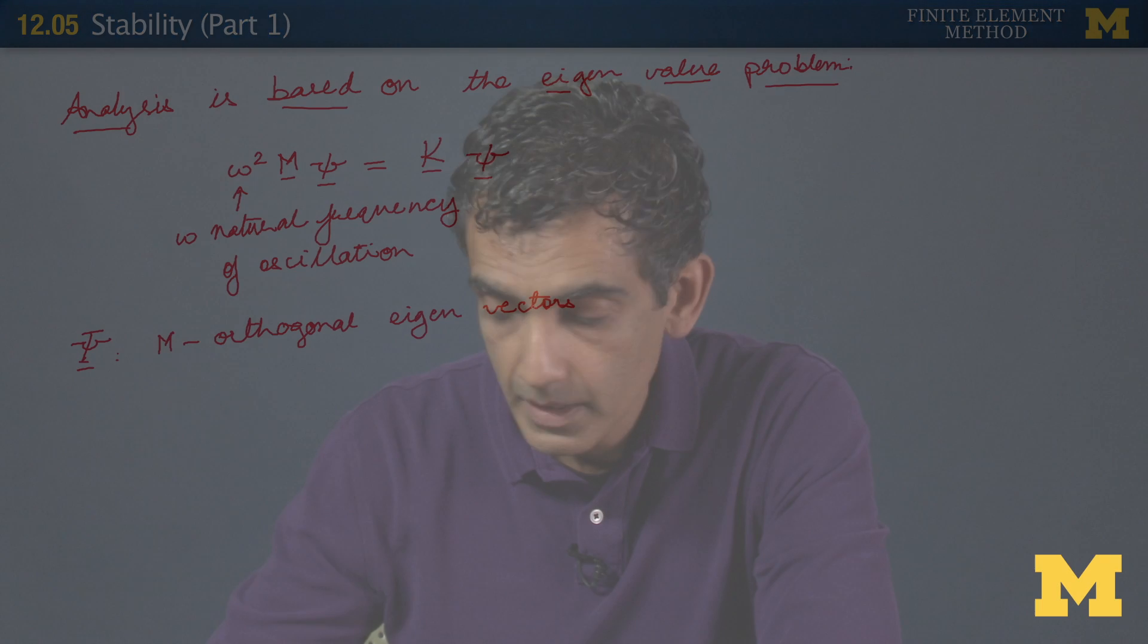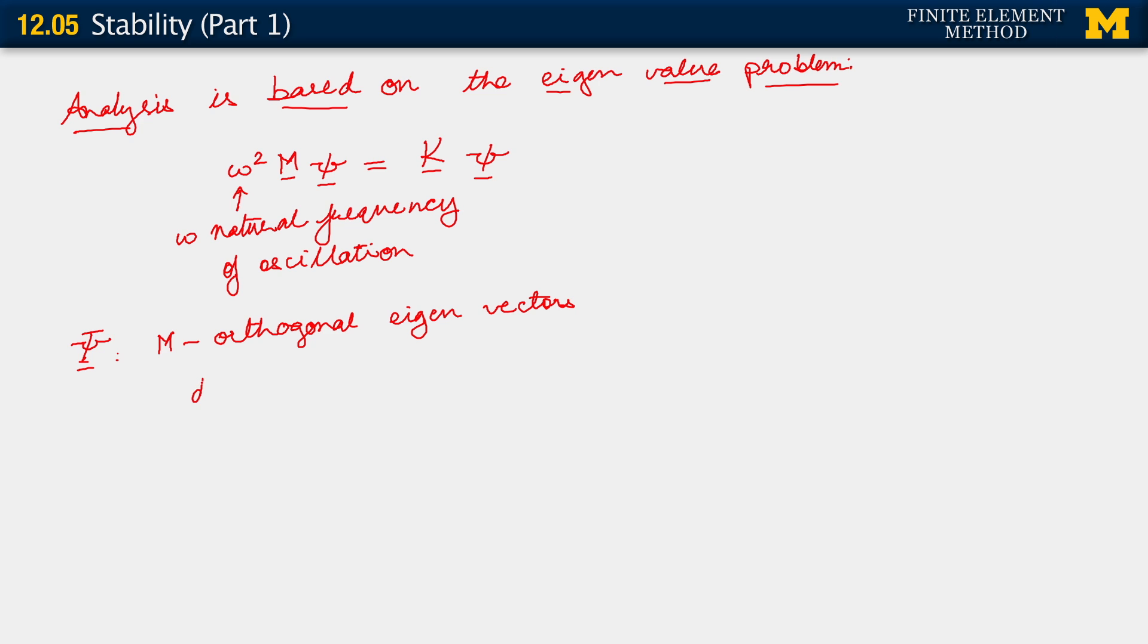When we do this, we proceed just as we did for the parabolic problem. By doing this, we can now do things like saying that any vector, like the D vector, can be constructed through a sum over L, D sup L psi L, where each psi L is an eigenvector.